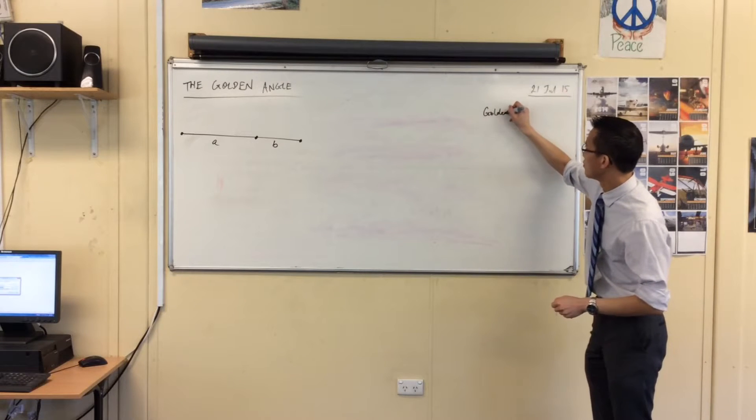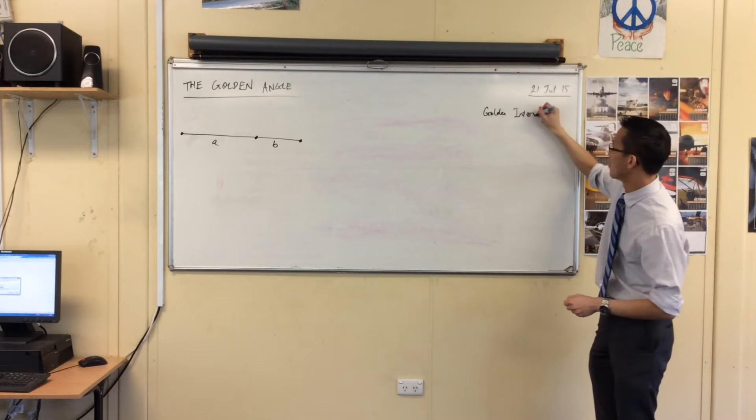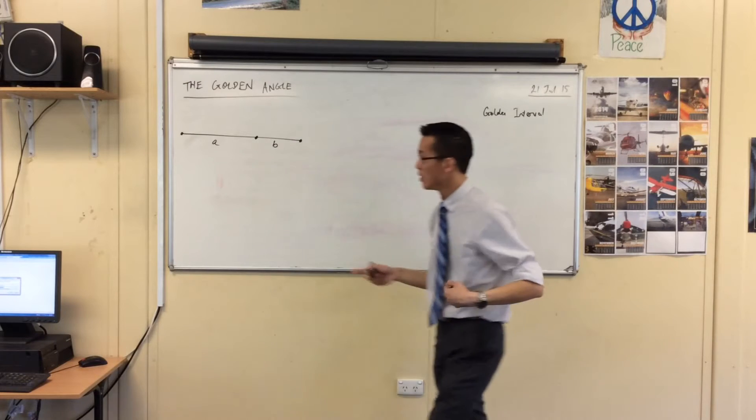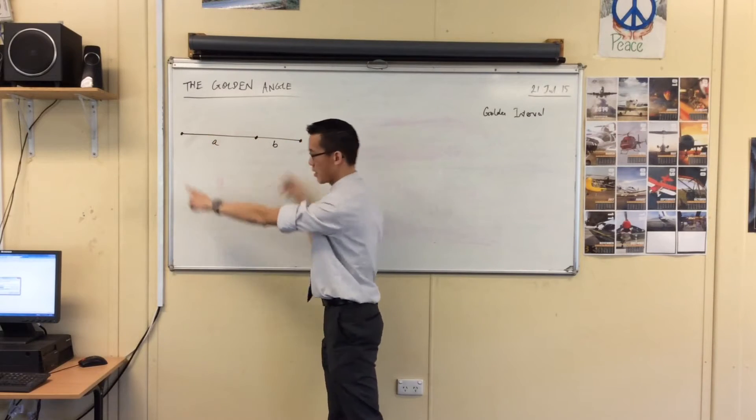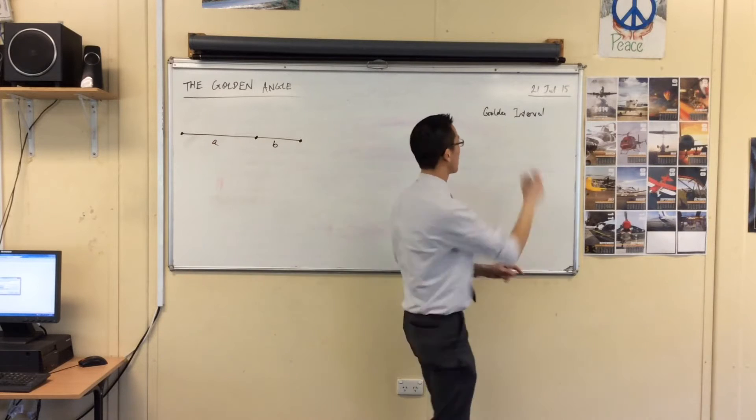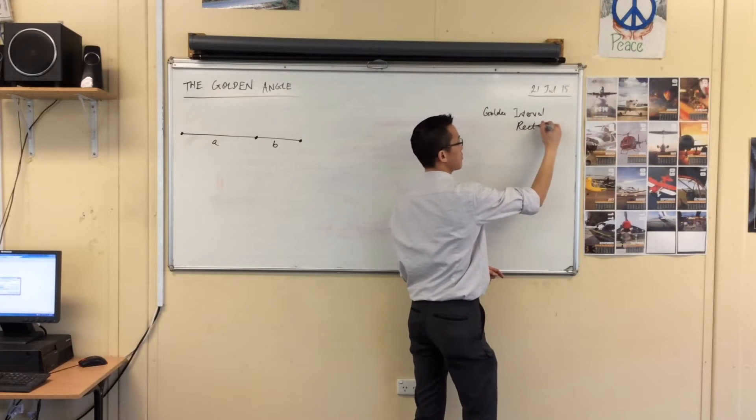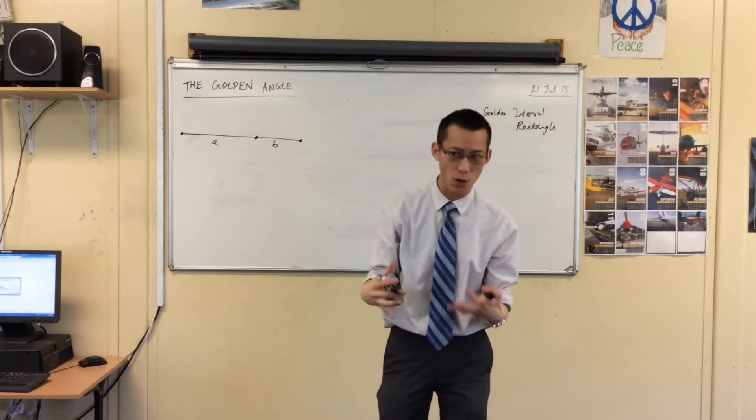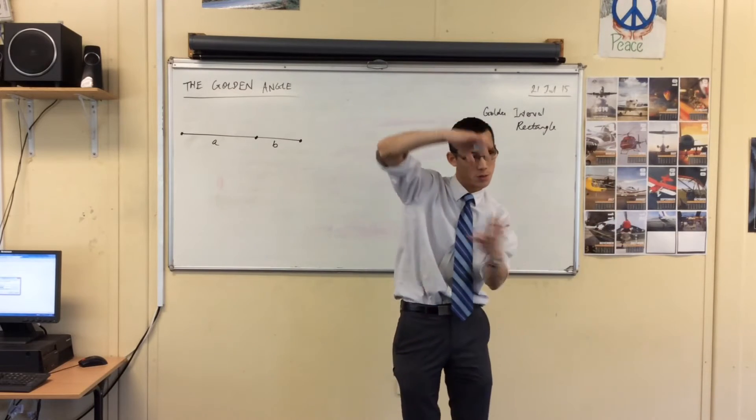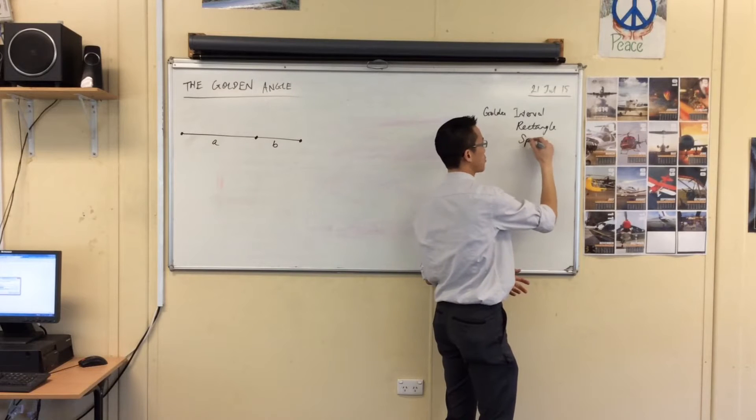We started with the golden interval, right? This guy over here. We used it to create, if you make a square out of this and a rectangle out of this, you get the golden rectangle. If you nest within themselves a whole bunch of golden rectangles and get smaller and smaller and smaller, you get that spiral.